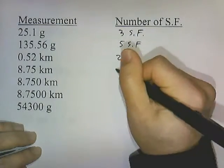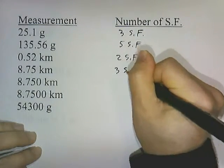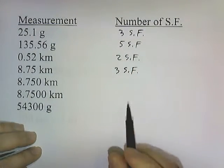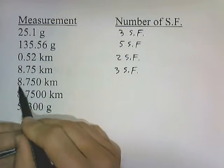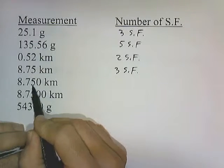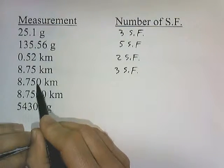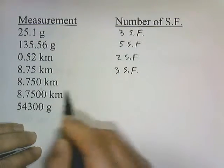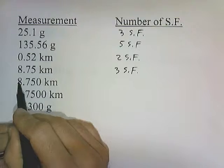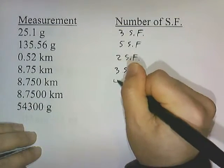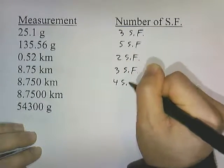8.75 kilometers — 3 significant figures. 8.750 kilometers — this zero is behind a number and it's behind a decimal, so it counts: 1, 2, 3, 4 significant figures.